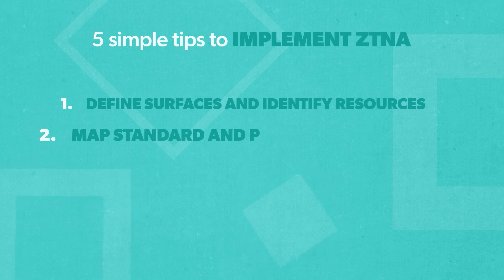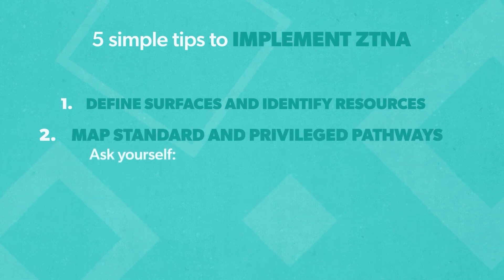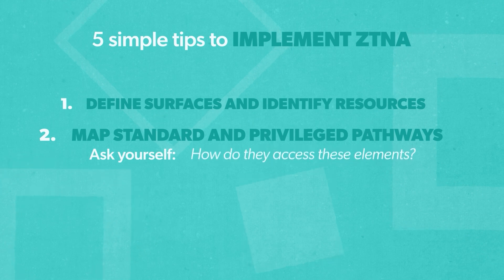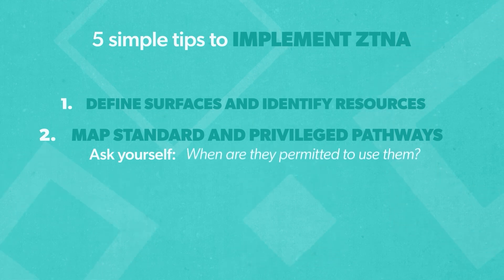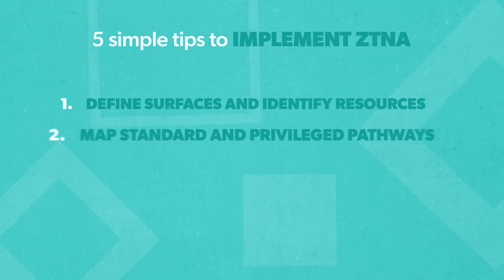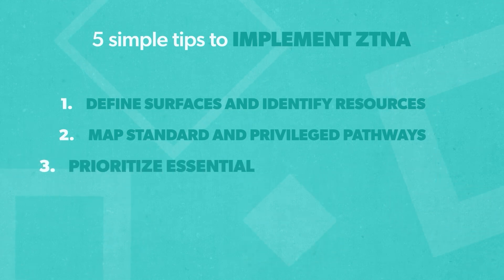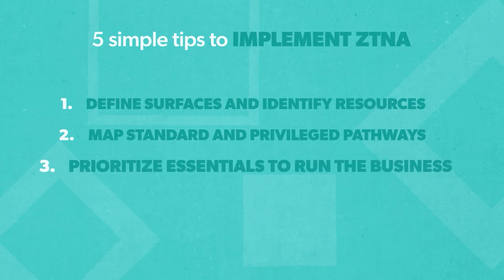Two: map standard and privileged pathways. Ask yourself — who has access to which elements? How do they access these elements? When are they permitted to use them? Three: prioritize based on what is most essential to running the business.